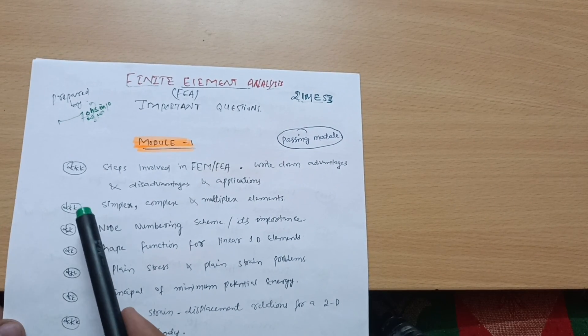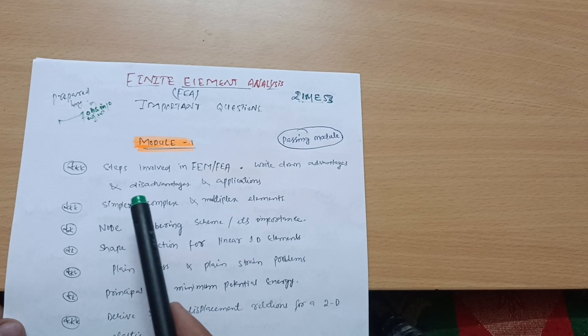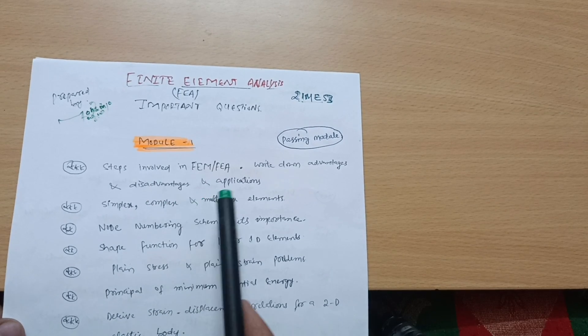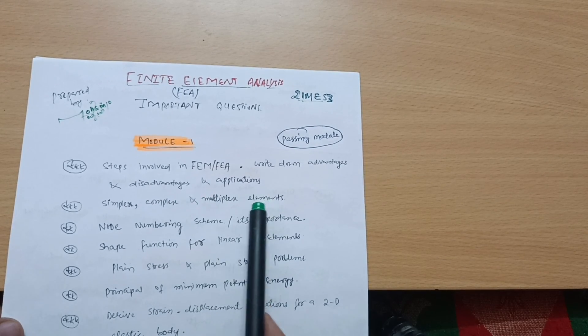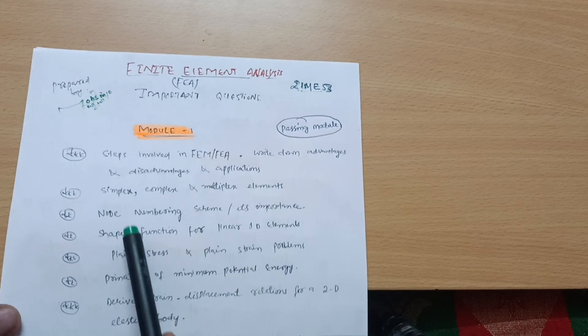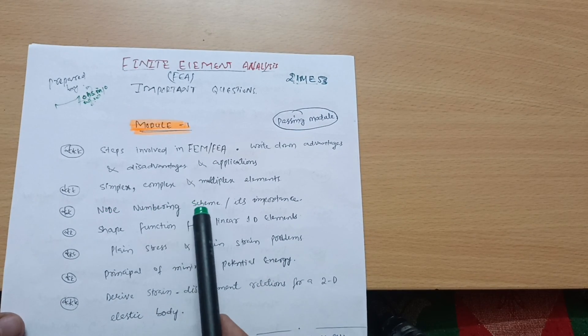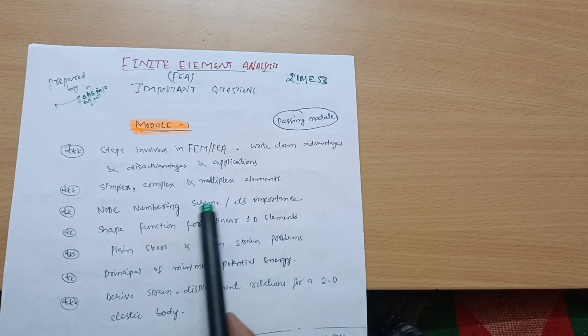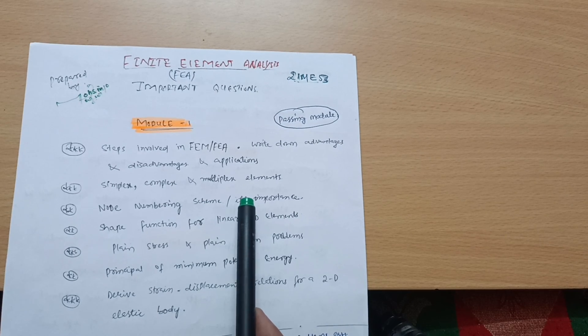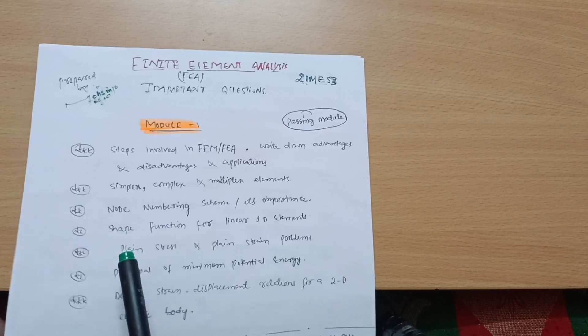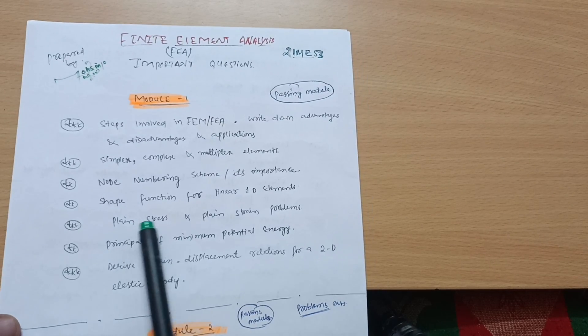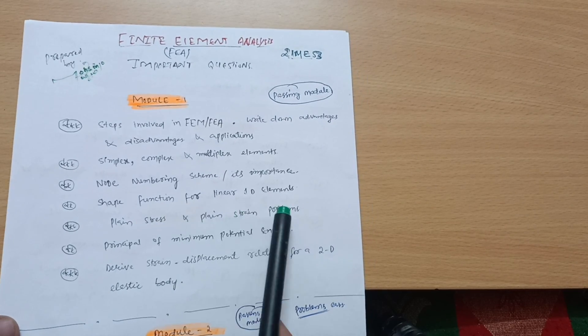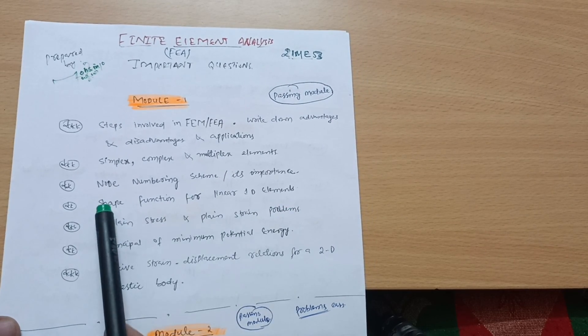Next is: what is simplex, complex, and multiplex elements? Again, an important one. What is the node numbering scheme and write down its importance? That may be a question. And what are plane stress and plane strain problems?